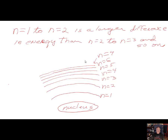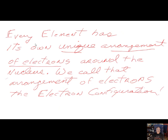The difference in energy levels becomes smaller as you get further from the nucleus. Going from n=1 to n=7, the energy levels get closer and closer together. So a transition from n=5 to n=4 would release less energy than, say, n=3 to n=2. Every element has its own unique arrangement of electrons around the nucleus, so each element has its own absorption and emission spectrum. We call that arrangement of electrons around the nucleus the electron configuration.